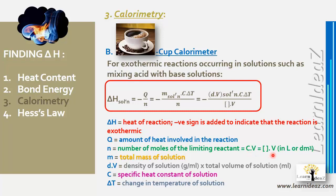To summarize the variables: m is the total mass of the solution found from density (g/mL) times total volume (mL). c is the specific heat constant, and delta t is the change in temperature.